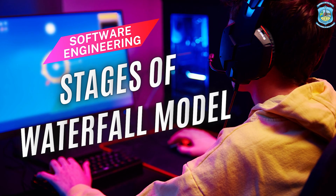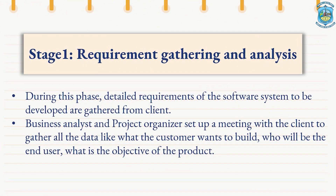The very first stage is requirement gathering and analysis, as we have already discussed in SDLC stages. During this phase, the detailed requirements of the software system to be developed are gathered from the client. The business analyst and the project organizers set up a meeting with the client to gather all the data — like what the customer wants to build, who will be the end user, and what is the objective of the product. All these are collected during this phase.